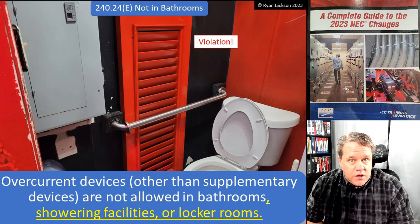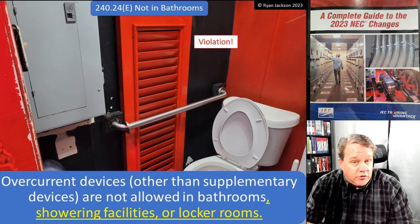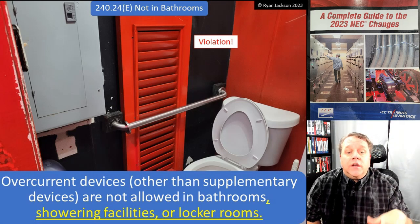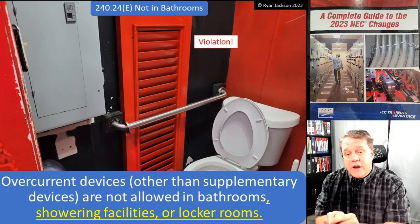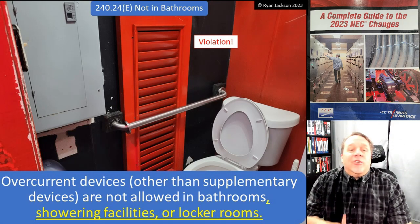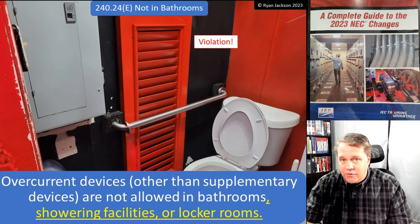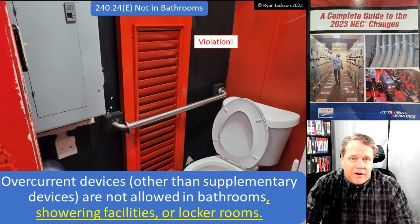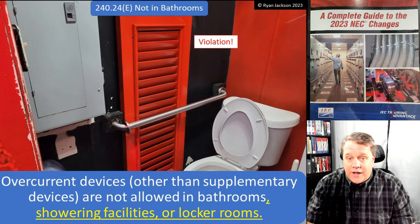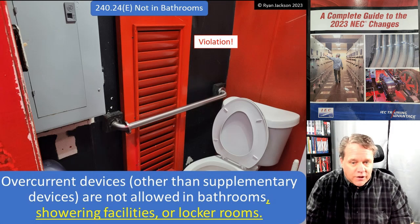240.24(E) — not located in bathrooms: overcurrent devices other than supplementary devices are not allowed in bathrooms, showering facilities, or locker rooms. It used to say only bathrooms of dwelling units and dormitories — now it says any bathroom. As a code instructor, I can't tell you how many times I was asked, "How come you can have a panel in a bathroom in commercial but not in residential?" I never had a good answer. The truth is, it probably never should have been allowed — either allow it in all or none.